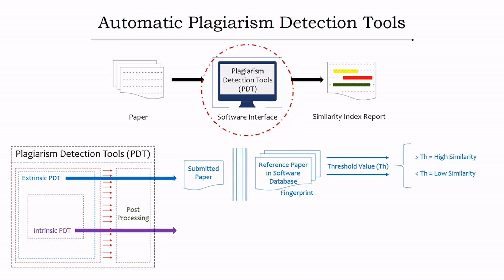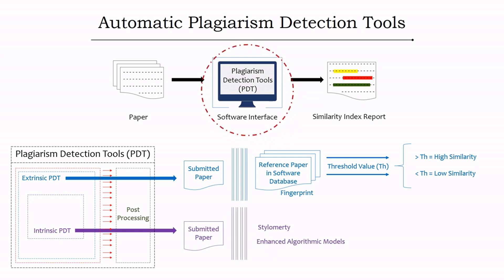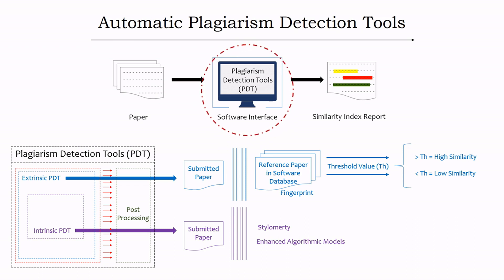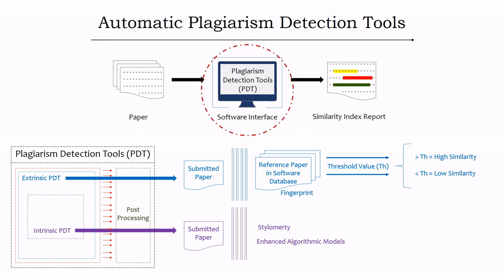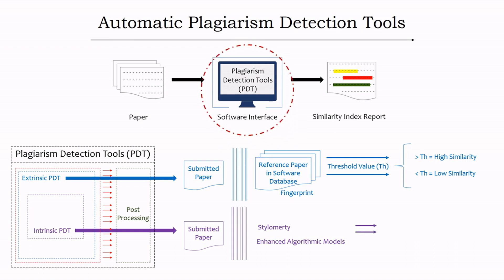In the second stage, intrinsic plagiarism detection statistically examines the stylometry of the submitted paper. Stylometry refers to the linguistic features of written text. The submitted paper is not compared with other documents; rather, the tool follows advanced computer algorithms to detect potential plagiarism.